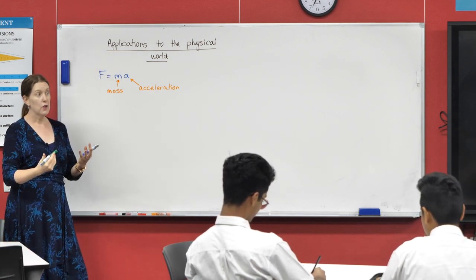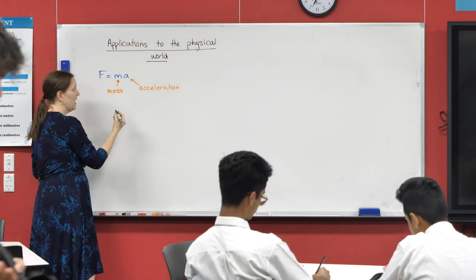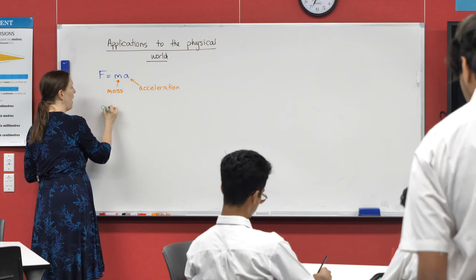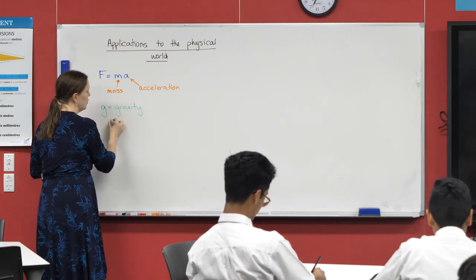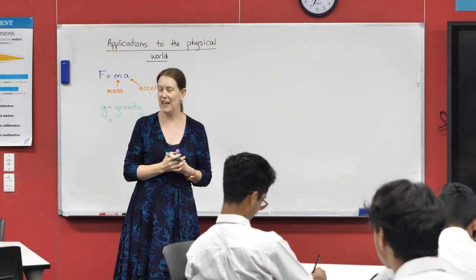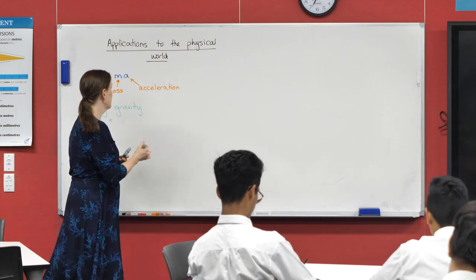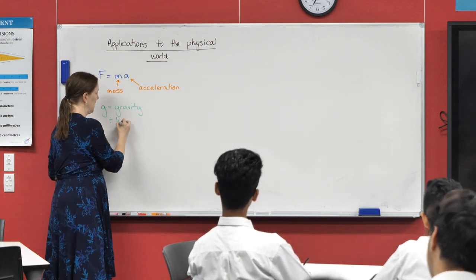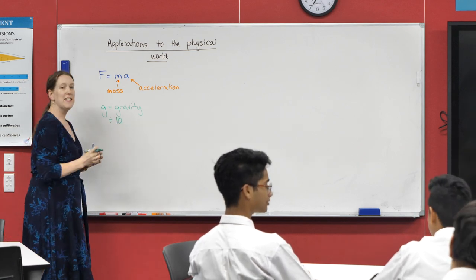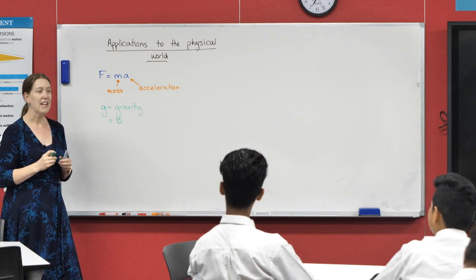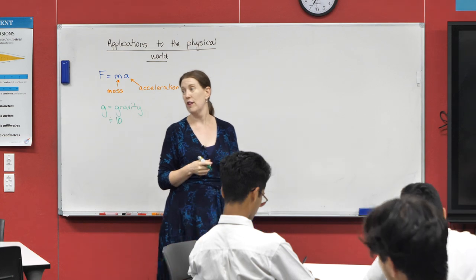For those of you who do physics, acceleration is often gravity and we call it g. And in physics you make g a fairly specific number, 9.81 something or other. In maths we say it's approximately 10. So there's your first unlearning. If it's not specified, it's always a really good idea to actually say what you're assuming, but more often than not they'll assume 10.